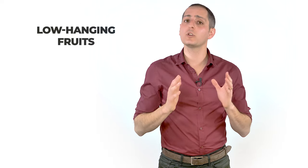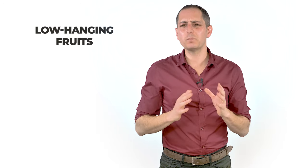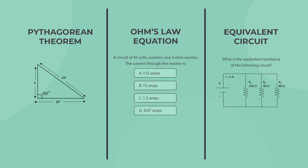The third and last thing you can take advantage of is the fact that the Amazon maintenance test will occasionally present you with a low-hanging fruit. Really basic stuff like the Pythagorean theorem, calculations based on Ohm's law, or calculating the equivalent resistance and voltage of circuits.